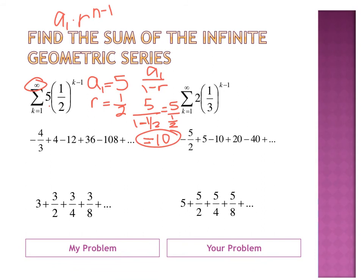Try the next one. The sum from one to infinity of two times one third to the K minus one. So let's just do this together real quick. What's my A1? Two. And my R? One third. So one minus one third, which is two divided by two thirds. So I multiply by the reciprocal two times three over two. And then the twos cancel and I just get three.